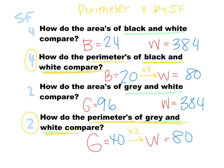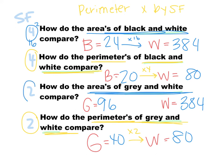Now let's talk about area. From black to white, take the scale factor of 4, square it — 4 squared is 16 — and 24 times 16 gives us 384. Same thing for gray to white: the scale factor was 2, square it to get 4, and 96 times 4 gives us 384. So if you're finding area, you multiply by the scale factor squared, and you can use that every time.